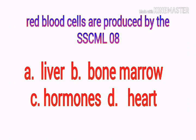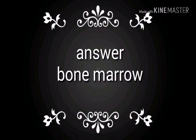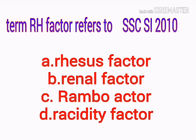Red blood cells are produced by: options a) liver, b) bone marrow, c) heart. Your answer is bone marrow.